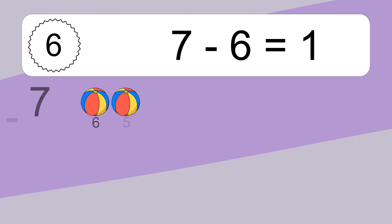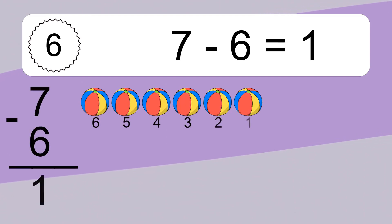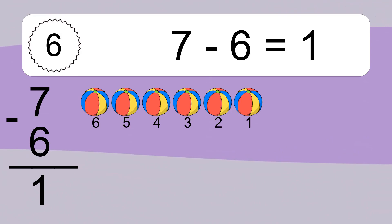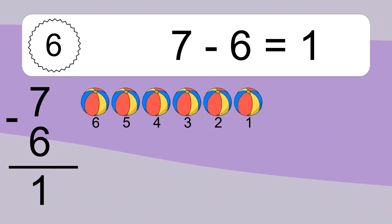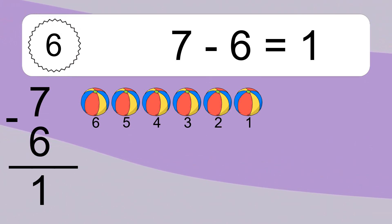7 minus 6 equals what? 7 minus 6 equals 1. Let's count it: 7, 6, 5, 4, 3, 2, 1.